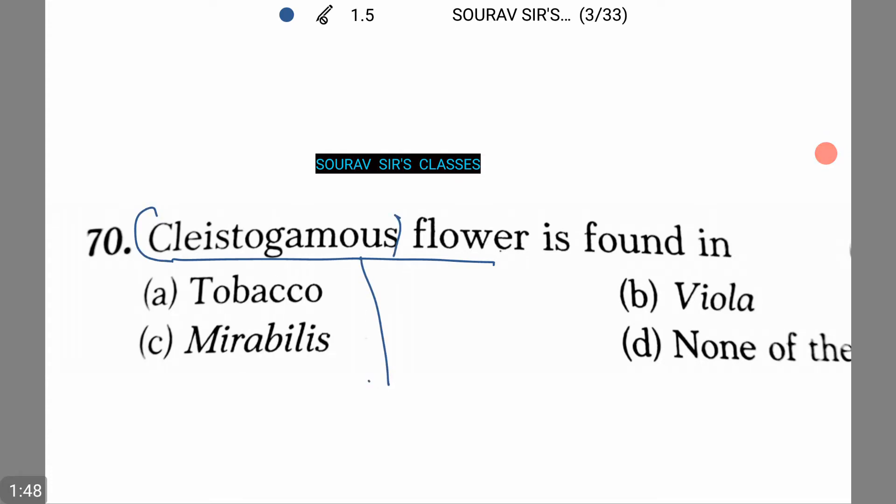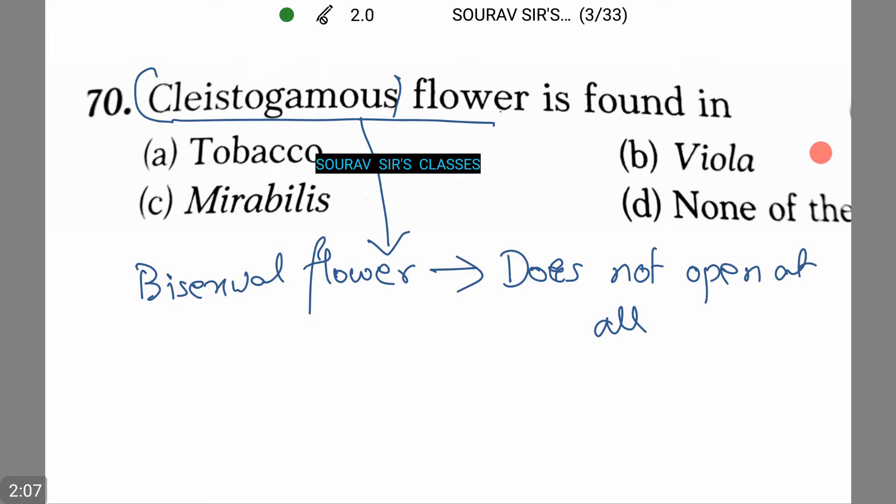Cleistogamous is a bisexual flower which does not open at all. In such flowers the anthers and the stigma lie close to each other. Oops I made an error over there. Let me just clear it.